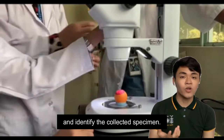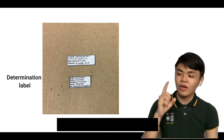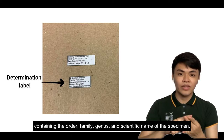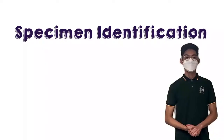Lastly, two important labels must be attached to the pin. First is the determination label, containing the order, family, genus, and scientific name of the specimen. Second is the identification label, where the locality, coordinates, date of collection, and collector's name are written down.